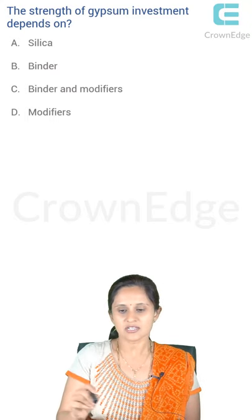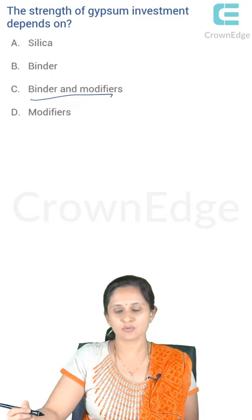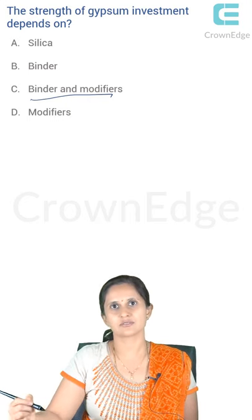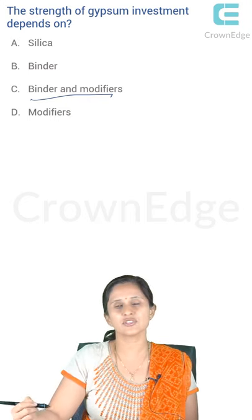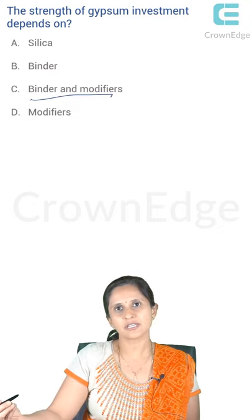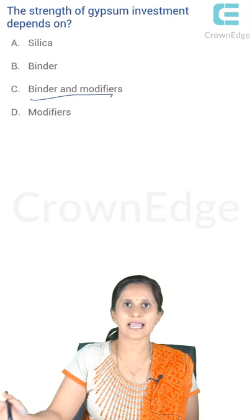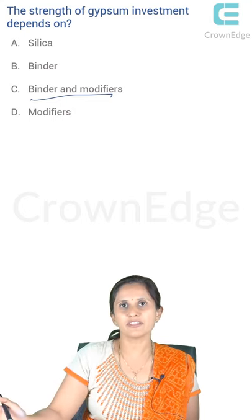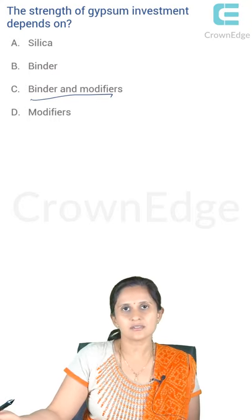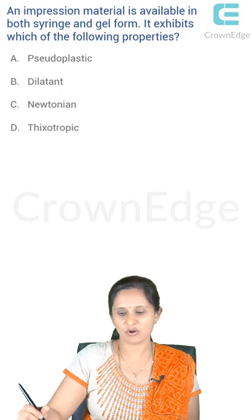The first question: the strength of gypsum investment depends basically on the binders and modifiers, so the answer is C. As discussed by Philip, we have the binders which are used to bind the silica products, and the chemical modifiers. The basic function of the chemical modifiers is to ensure that binding properties are retained. The modifiers act on the binder — using chemical modifiers helps you add more and more binders, which increases the strength of the gypsum product. So the answer is both binders and modifiers.